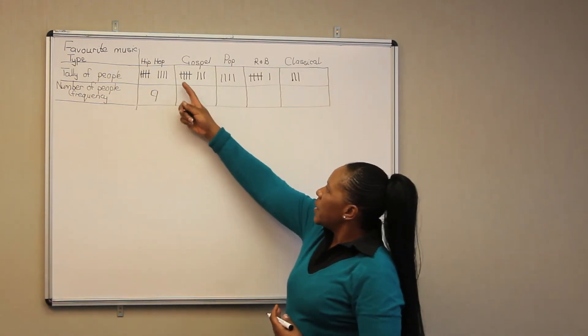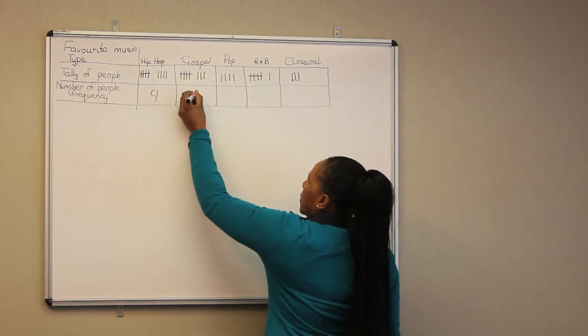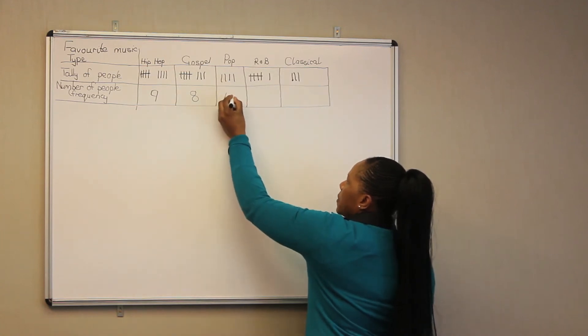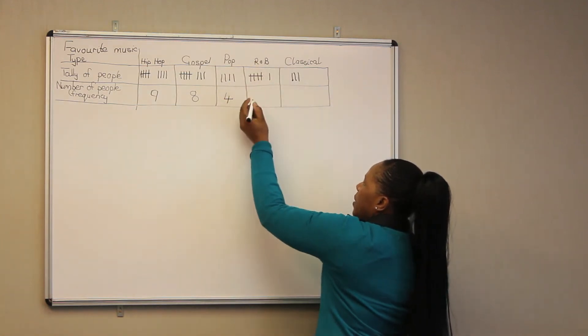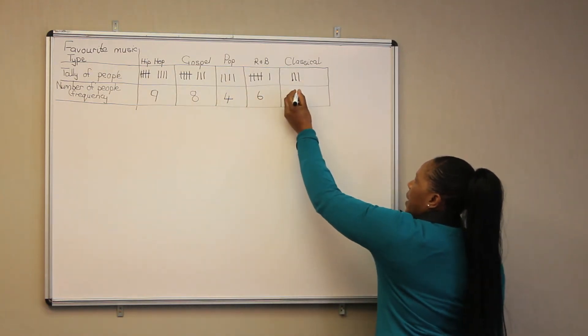For gospel, we have five plus three, which gives us eight people. For pop, we have four people. For R&B, we have six people. For classical music, we have three people.